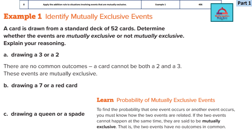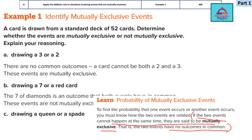The definition we are going to use for mutually exclusive events is: if 2 events cannot happen at the same time, they are said to be mutually exclusive. So we are going to look for common outcomes. If 2 events don't have any outcomes in common, they cannot happen at the same time and are mutually exclusive. If they do share a common outcome, they are not mutually exclusive.